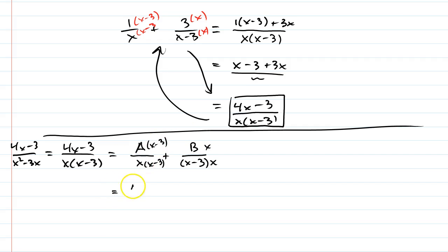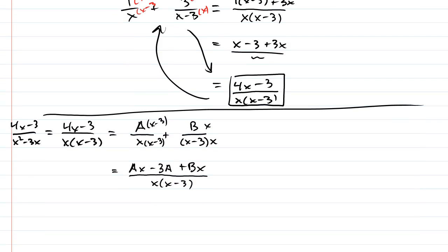So, on top, I'm going to have Ax minus 3A plus Bx, and that's going to be all over x times x minus 3. Now, once we're at this point, we have common denominators all the way across. So, I can actually ignore the denominators for a bit while we're solving.